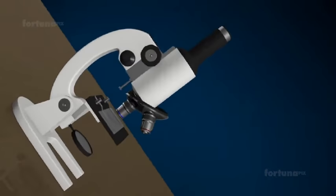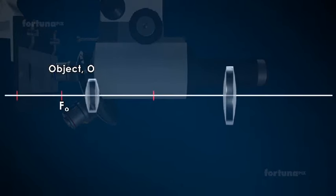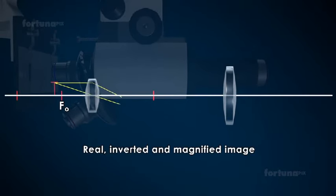Working of the compound microscope. The object O is placed just outside F0, the focus of the objective lens. A real, inverted, and magnified image I1 is formed. The magnified image I1 acts as an object for the eye lens.